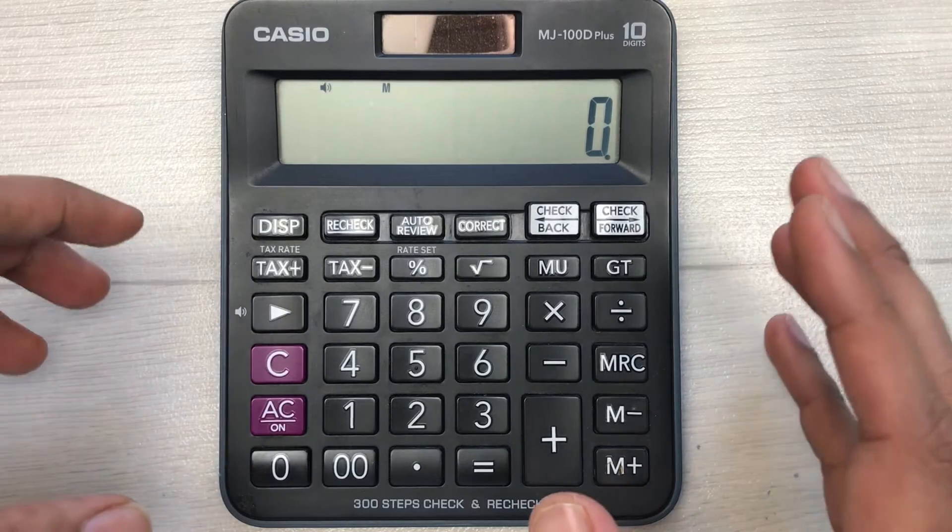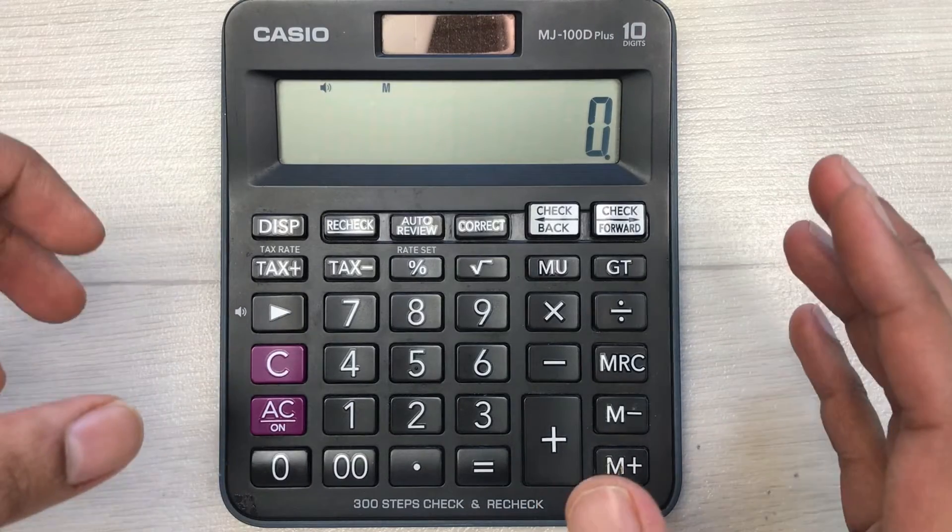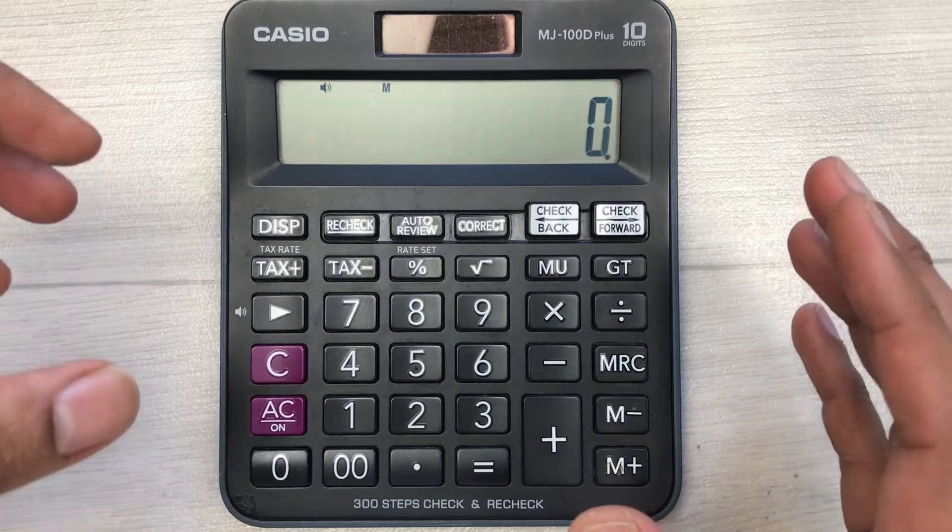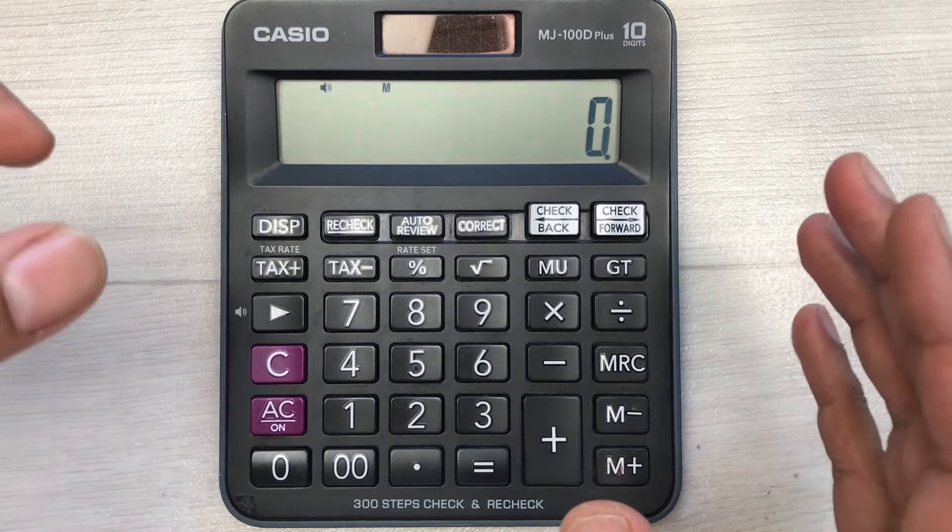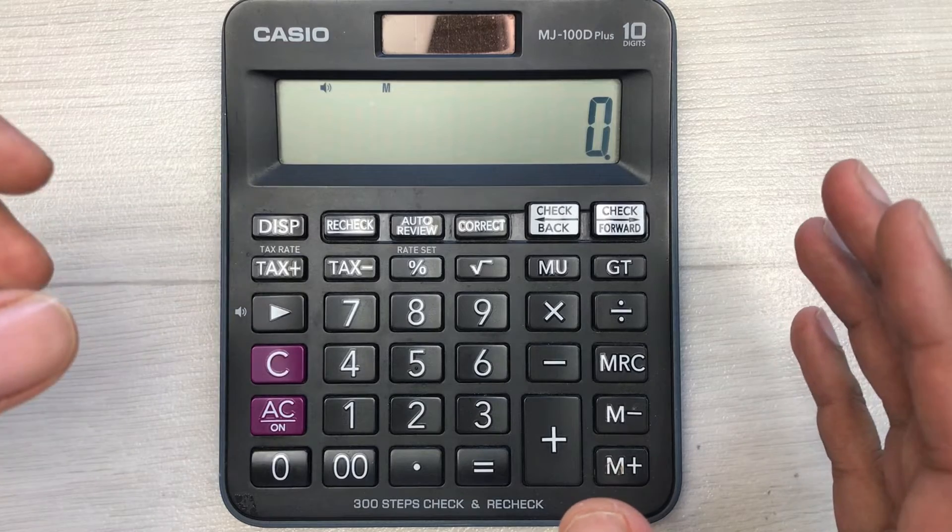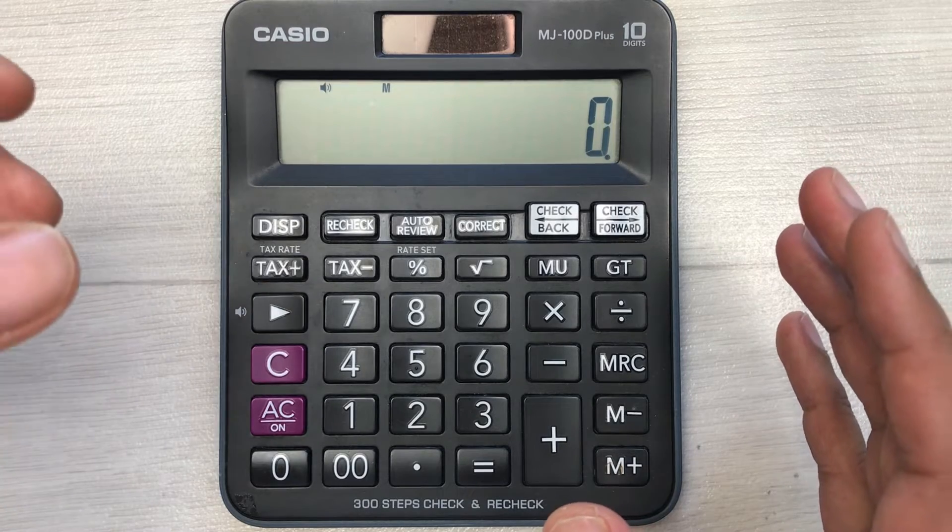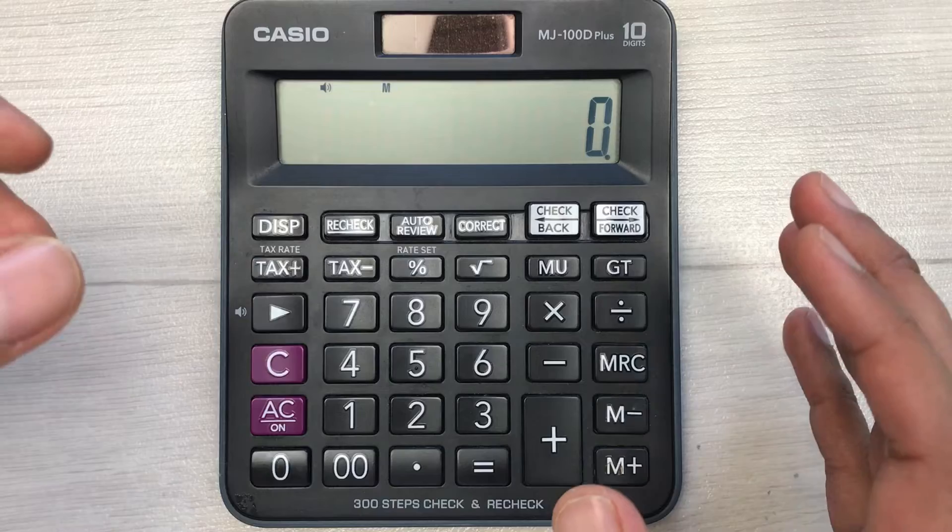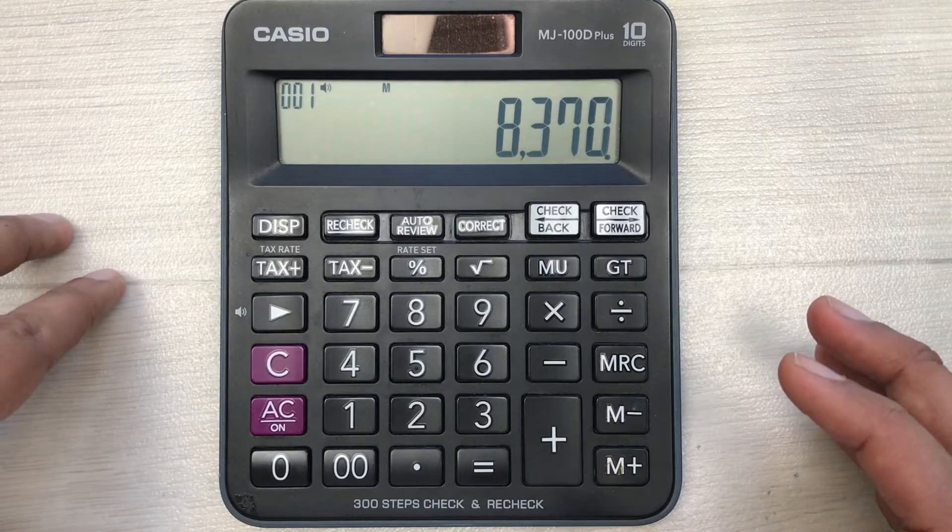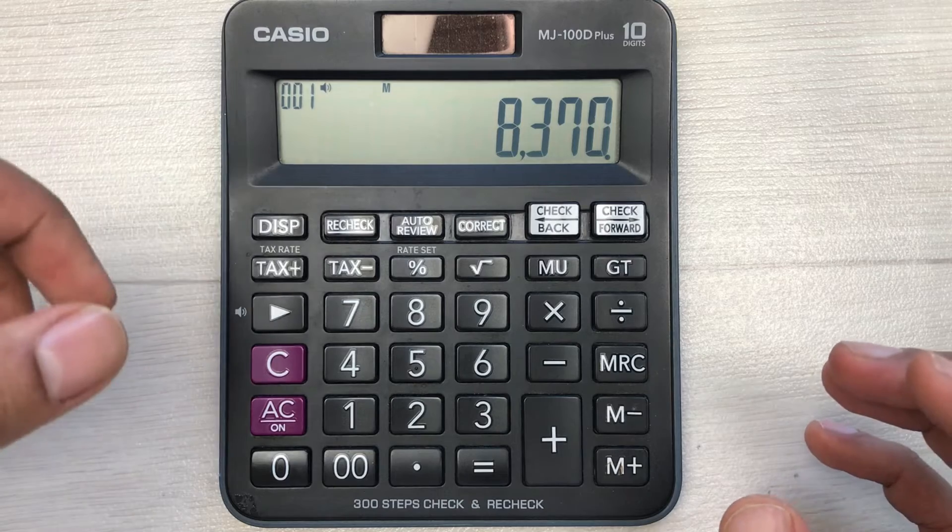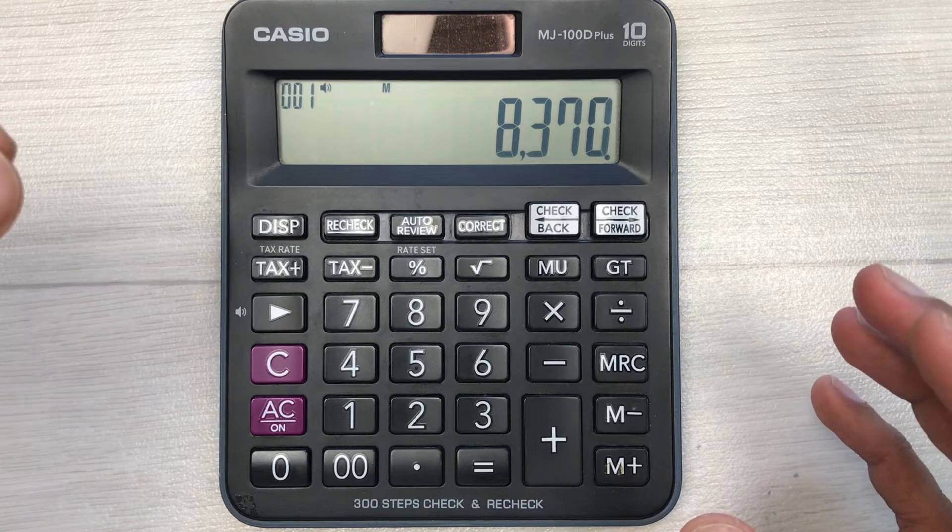Hello guys, I hope you are doing really well. In today's video, I'm going to show you how to calculate 40% discount on your calculator. For example, you are in a shop and you like a jacket. The price of that jacket is 8,370.